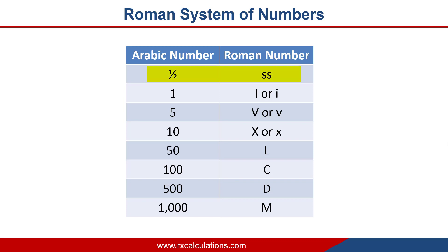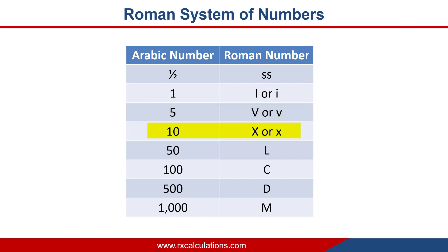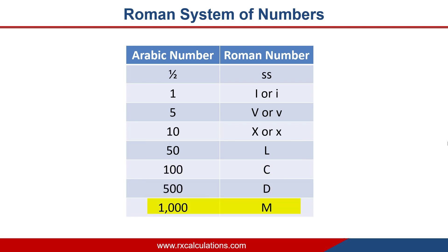The stem numbers are: half = ss, one = I, five = V, ten = X, fifty = L, one hundred = C, five hundred = D, and one thousand = M. These eight stem numbers serve as the building blocks by which other numbers in the Roman system are generated. In order to generate numbers in the Roman system, you need to understand and follow eight important rules.